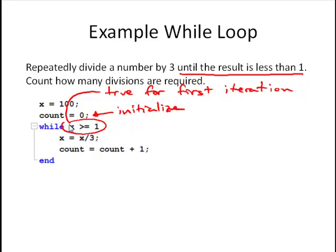Then each time through the loop we'll divide x by 3 and then increment our counter. Note we don't have any sort of incrementing variable like we do with a for loop. The way to increment a counter in a while loop is just with this statement count equals count plus 1.